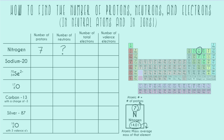Next, we have the number of total electrons. A neutral atom has the same number of electrons as it does protons, which is the same as the atomic number. So if you aren't told anything about an atom's charge, you can assume it's neutral. That means our nitrogen is going to have seven electrons, the same as our atomic number.